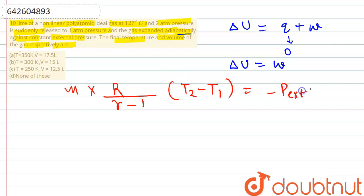Now we know that it is a case of the non-linear polyatomic ideal gas, so gamma for that we know is equal to Cp by Cv, and this value in this case comes out to be 1.33.